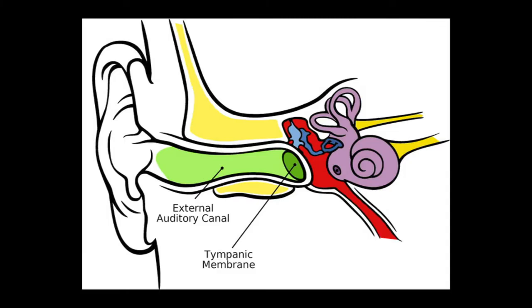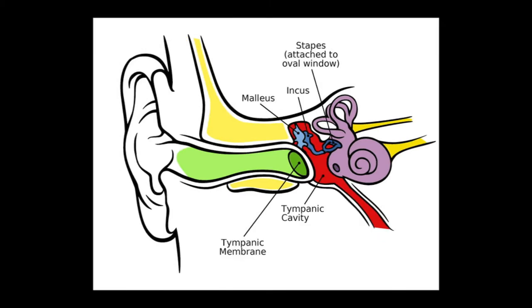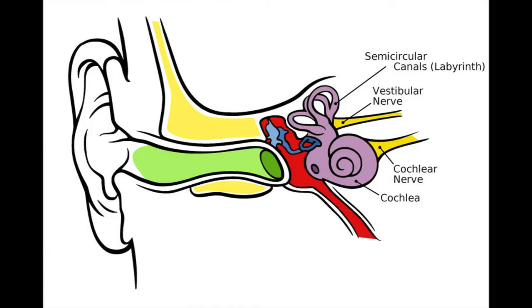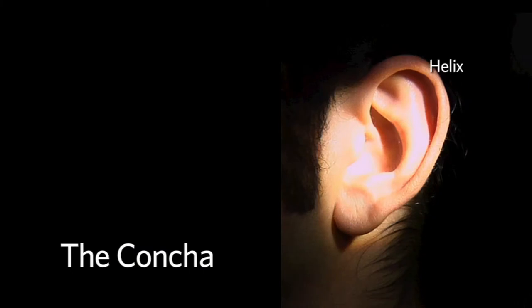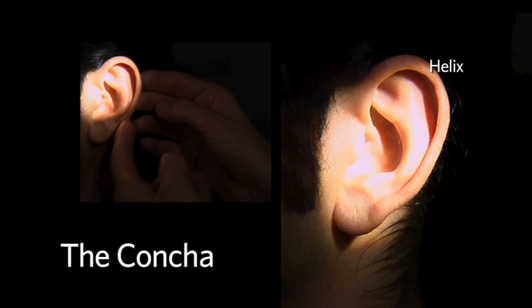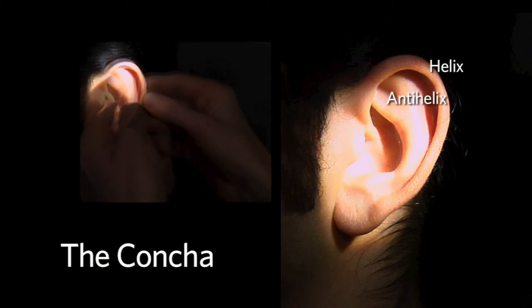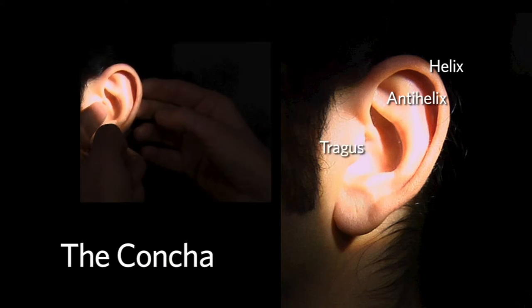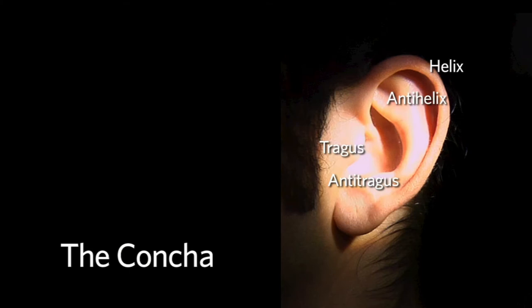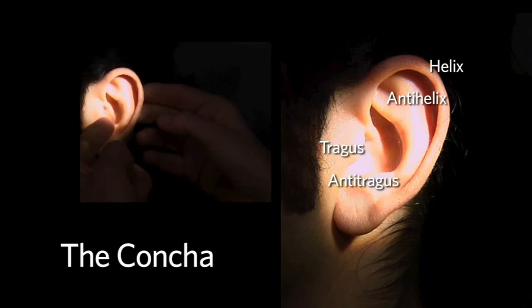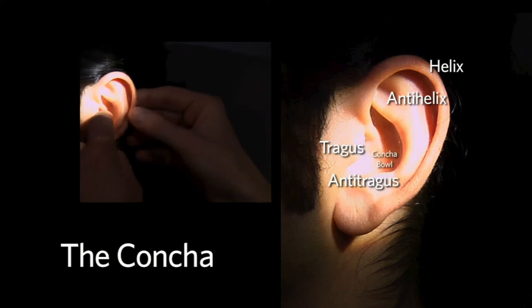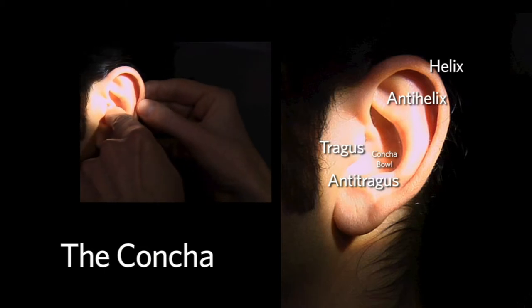The external ear is sometimes called the auricle or pinna. Looking inward, the external ear includes the concha and the ear canal up to the tympanic membrane. The middle ear starts at the tympanic membrane and ends on the bony floor of the middle ear. The inner ear contains the cochlea and the labyrinth. The concha has the following components: the helix, anti-helix, tragus, anti-tragus, concha bowl, and lobule.